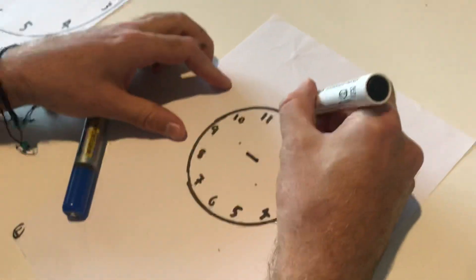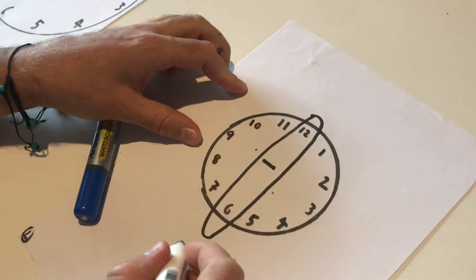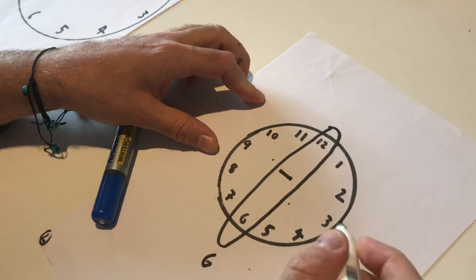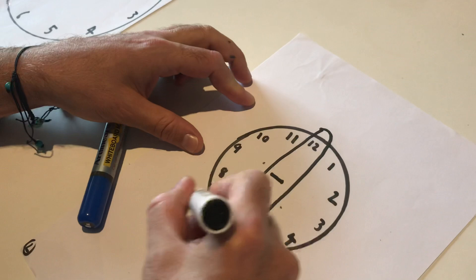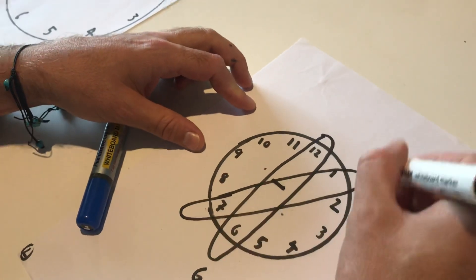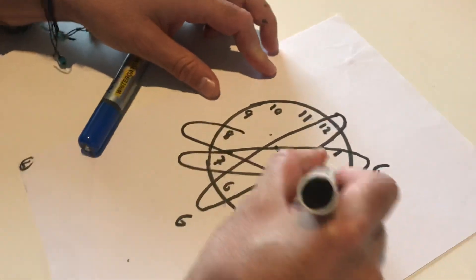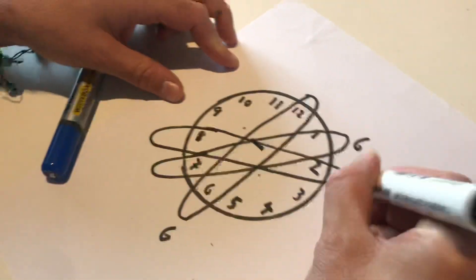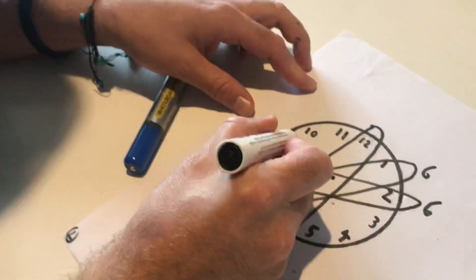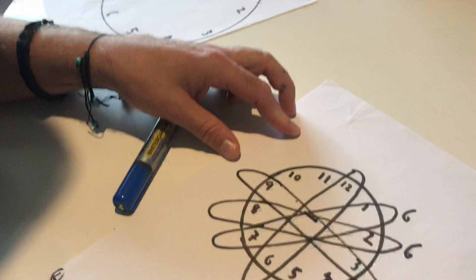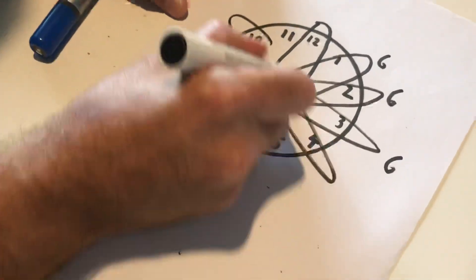So, 12 minus 6 is what? 6. Good. 7 minus 1 is what? 6. Good. 8 minus 3 is what? 6. Good. 9 minus 3 is what? 6. Good. 10 minus 4 is 6.